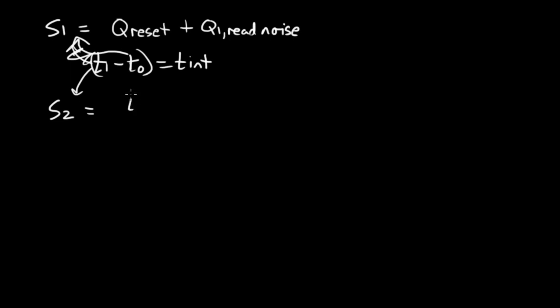Because we have the photocurrent plus the dark current times T1. This is, roughly speaking, the signal electrons that we're going to see. There's going to be associated with that, and this is a more confusing topic, there's going to be shot noise.